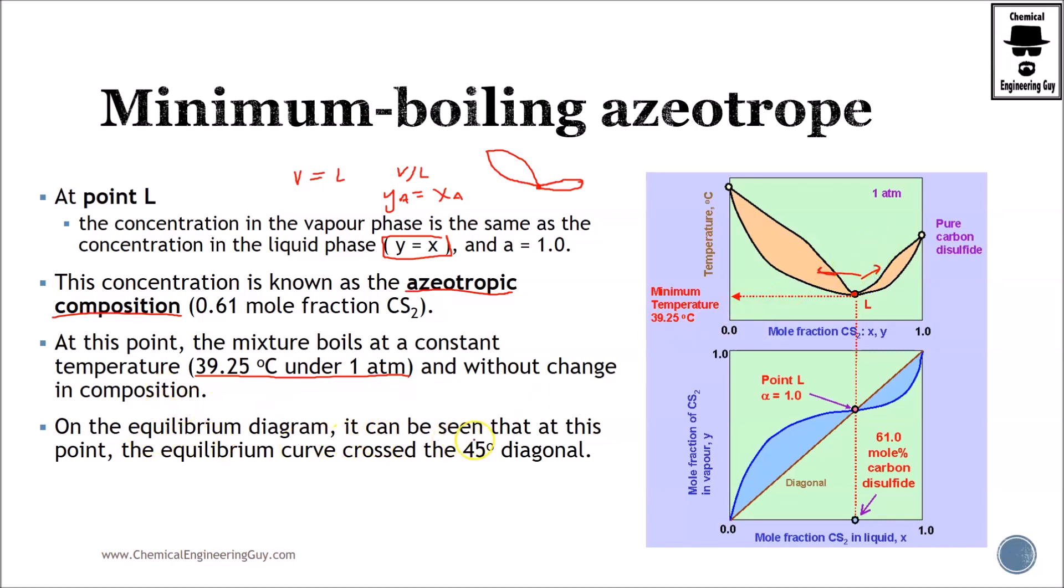On the equilibrium diagram, it can be seen that at this point we have the line with the 45 degrees. This is temperature versus composition, but let's go to composition versus liquid composition and vapor composition. Remember, if we have a crossing in the xy diagram or the 45-degree line, then we will not be able to carry out our distillation. Now we know that this is the azeotropic point.